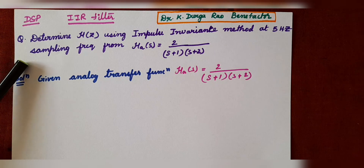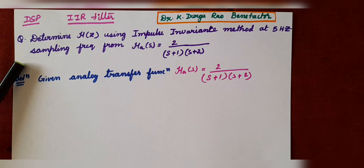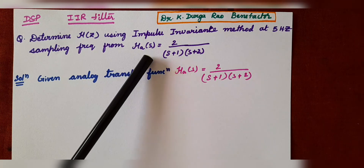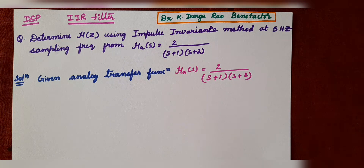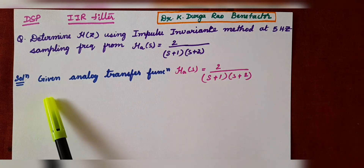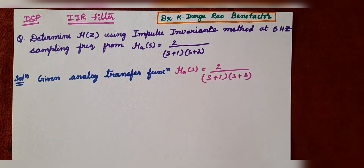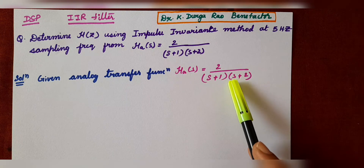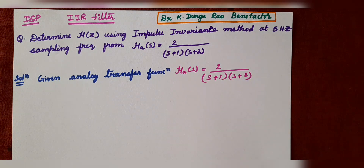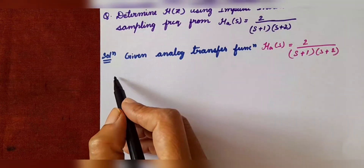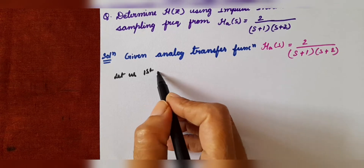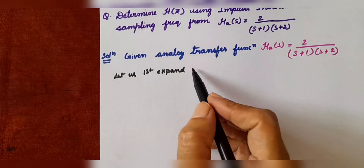The given question is: determine H(z) using the impulse invariance method at 5 Hz sampling frequency from H_a(s), which is given as 2 divided by (s+1)(s+2). This is the analog transfer function. Coming to the solution, first write the given analog transfer function H_a(s) = 2 / [(s+1)(s+2)]. Let us first expand this given H_a(s) into partial fractions.